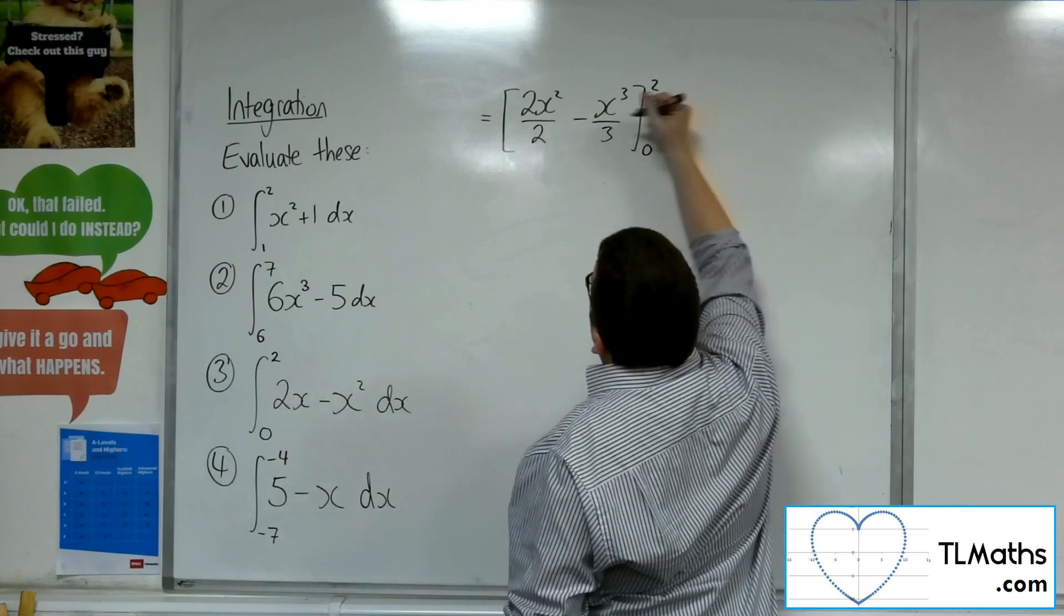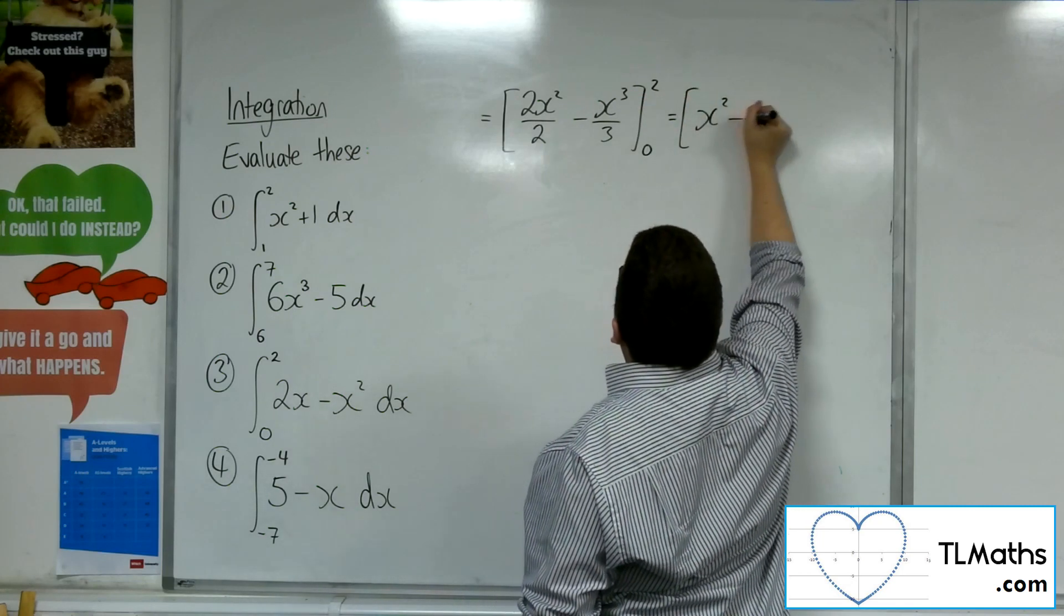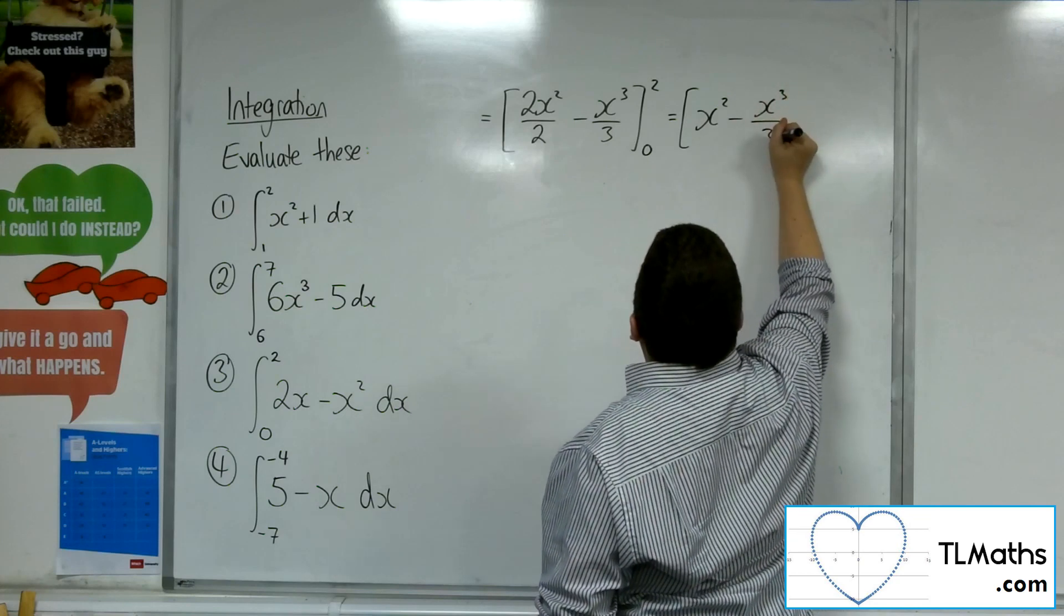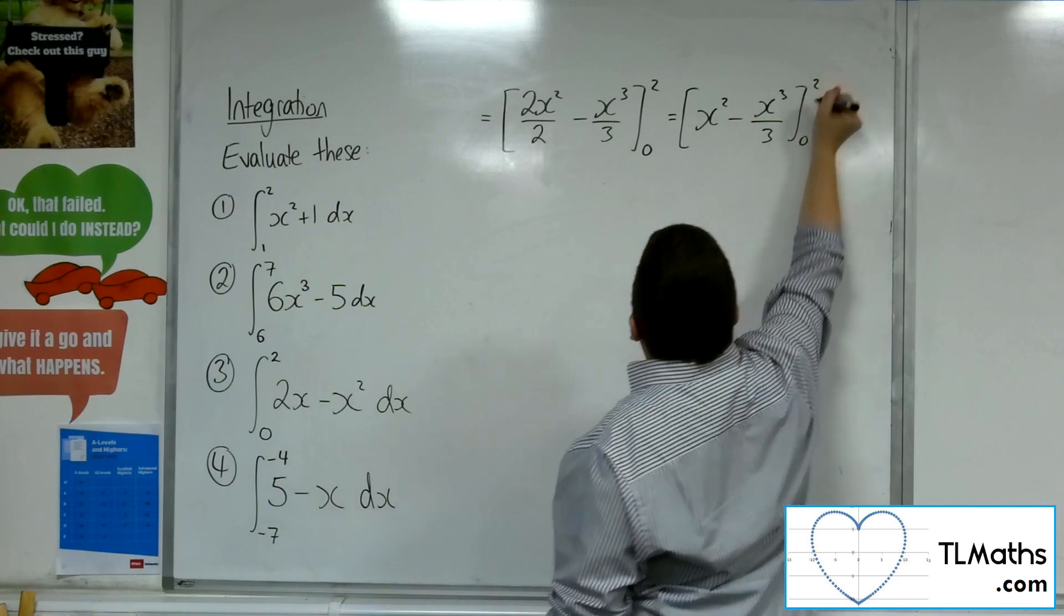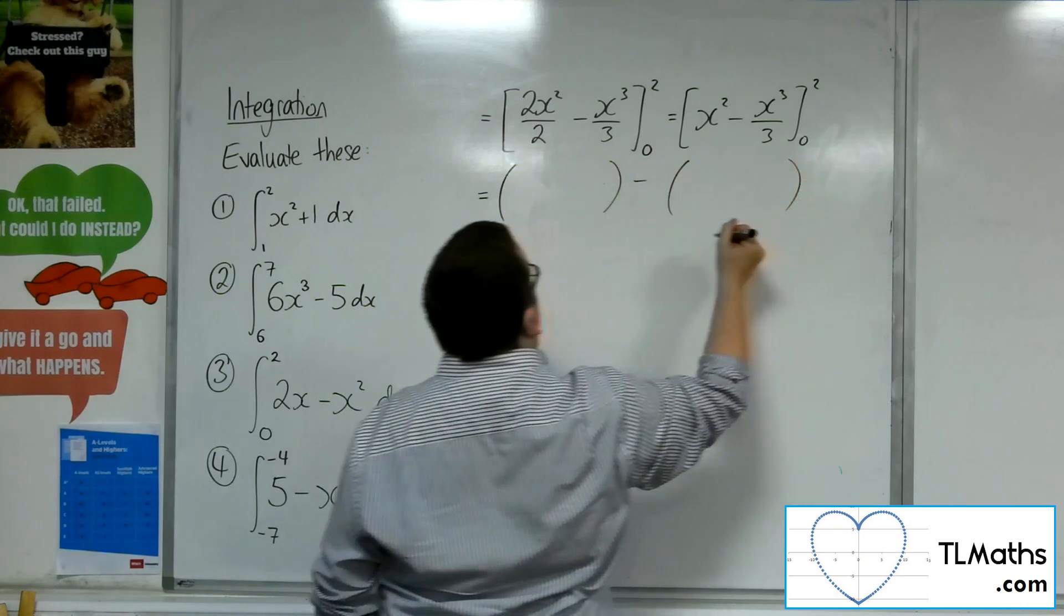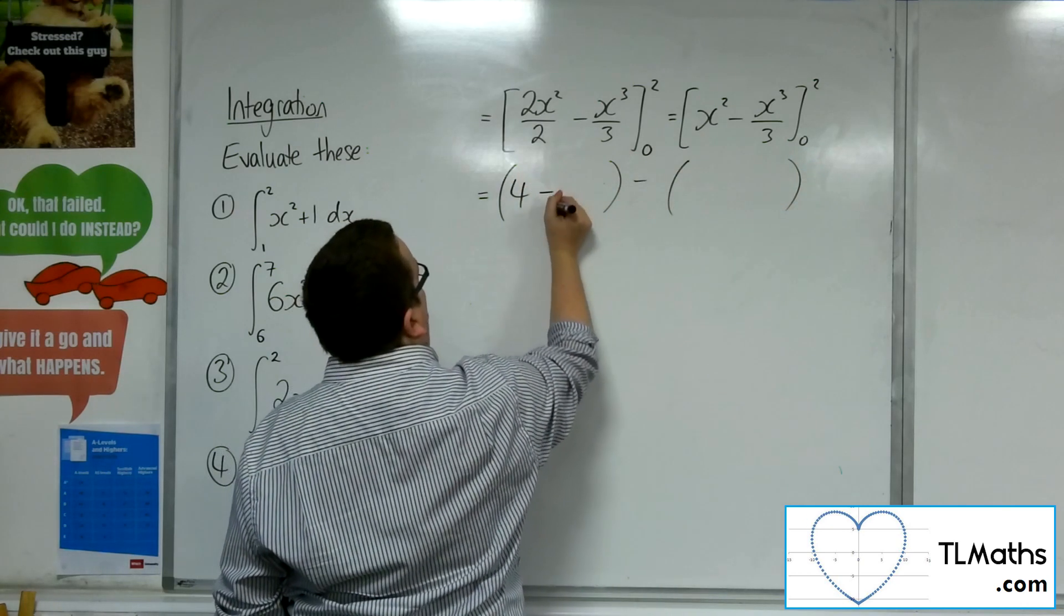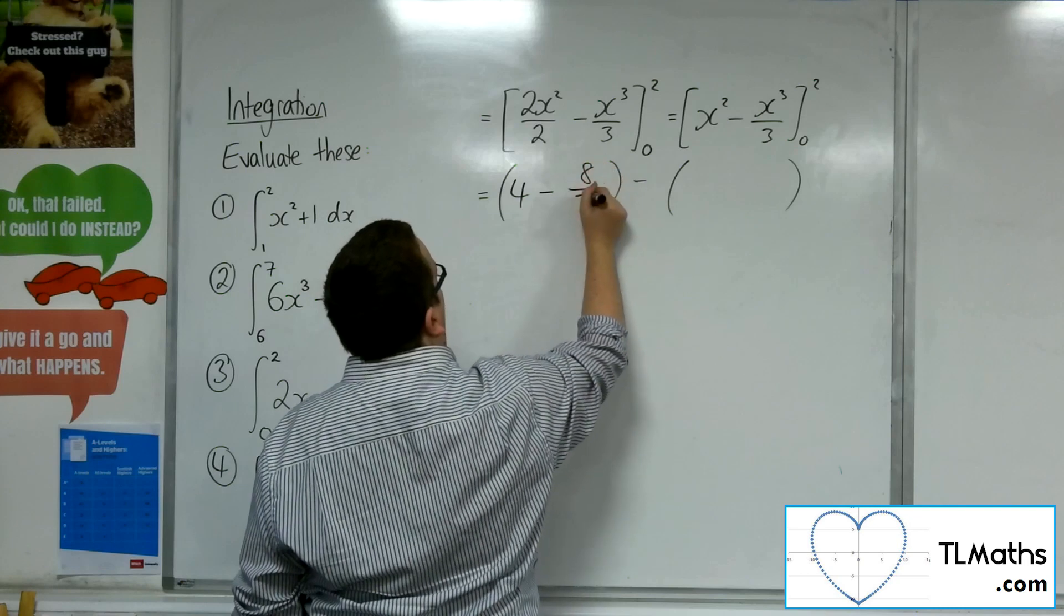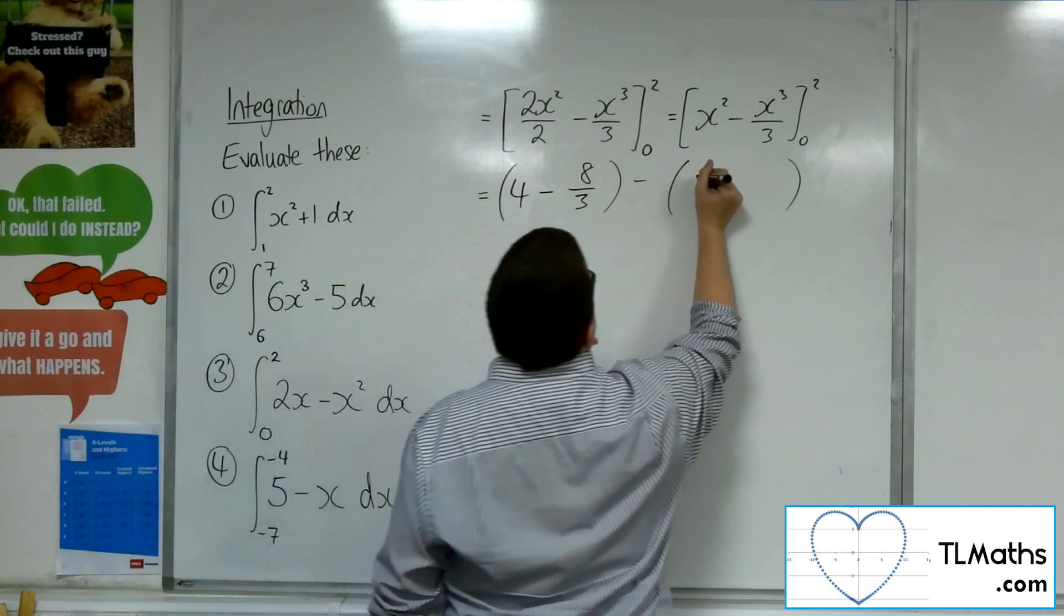So the 2x squared over 2 will simplify to just x squared, so I'll rewrite this first. So we're going to want to substitute in the 2 first. So we're going to get 2 squared, which is 4, take away 2 cubed over 3. Substitute in the 0.